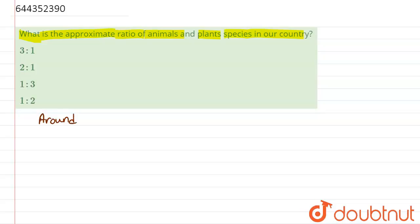47,000 species of plant. Around 47,000 species of plants.